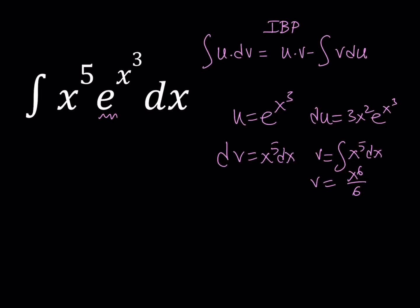Now, when you put it together in our integration by parts formula, we're going to get x to the sixth over six times e to the power x cubed minus one-half times the integral of x to the sixth multiplied by e to the x cubed dx. Notice that this integral here is not simpler than what we started with. It's getting more complicated, which means integration by parts is not a good idea.